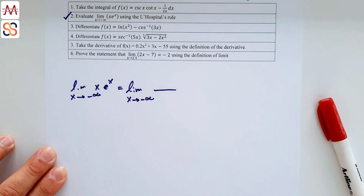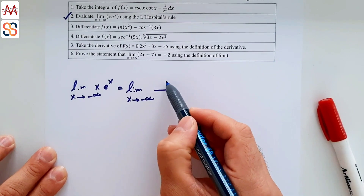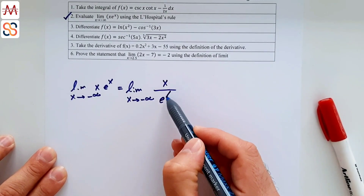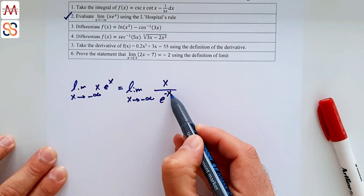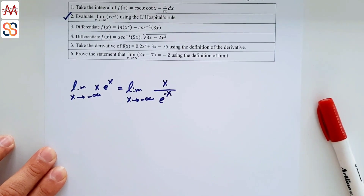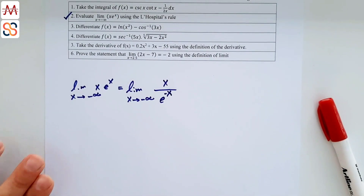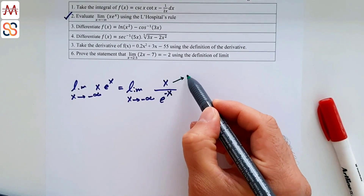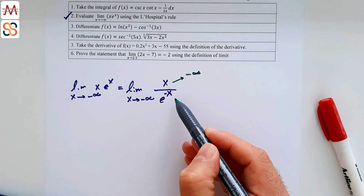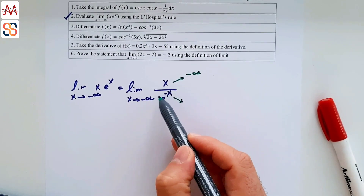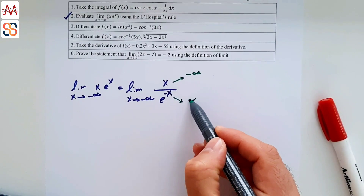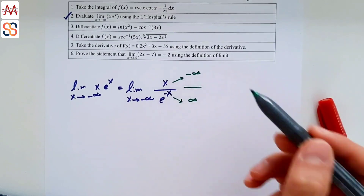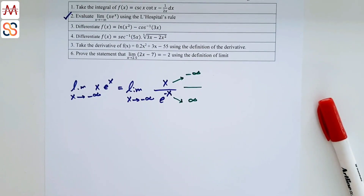We keep x on top and move e^x to the bottom, giving x / e^(-x) — noting the sign changes when moving from numerator to denominator. As x approaches negative infinity, the top x approaches -∞, and e^(-x) approaches e^(+∞), which is +∞. So we have -∞/∞, an indeterminate form, and we can apply L'Hôpital's rule.